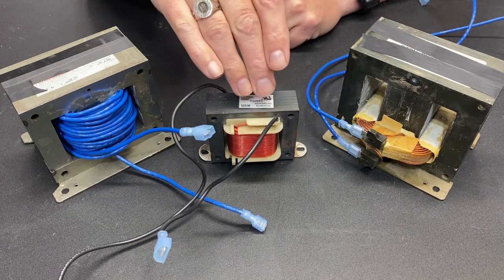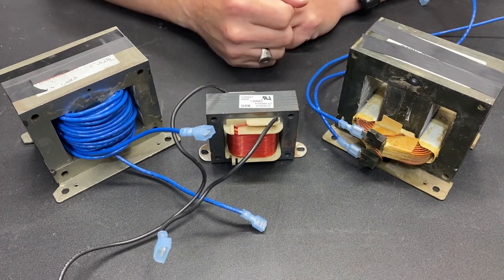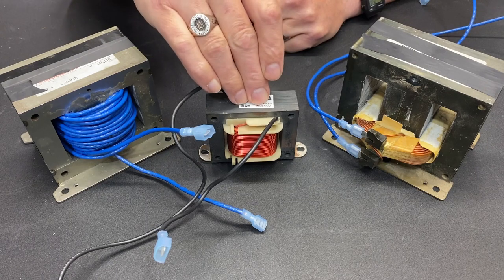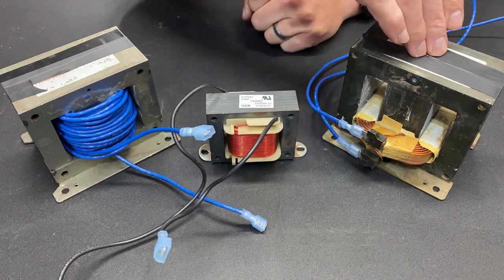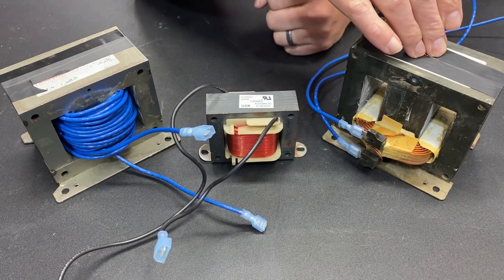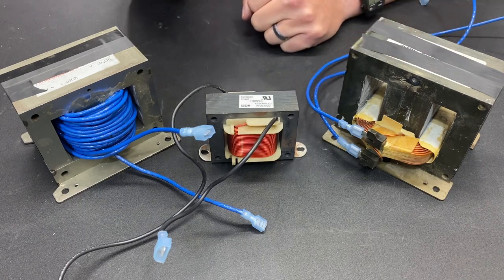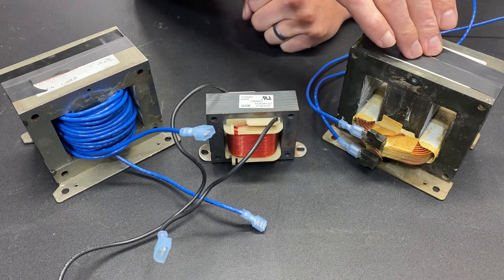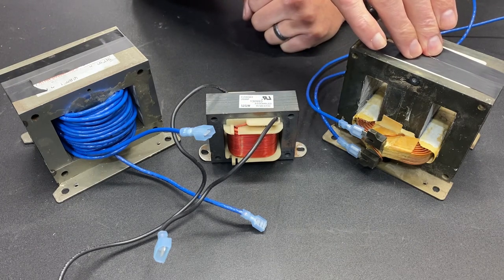Now, big surprise, this one right here worked the best. And that makes sense. This is designed to be a motor choke. This is designed to be a transformer. At least that was its original function. So it stands to reason that this is going to be better at doing its job than the modified version of this was at doing its job.